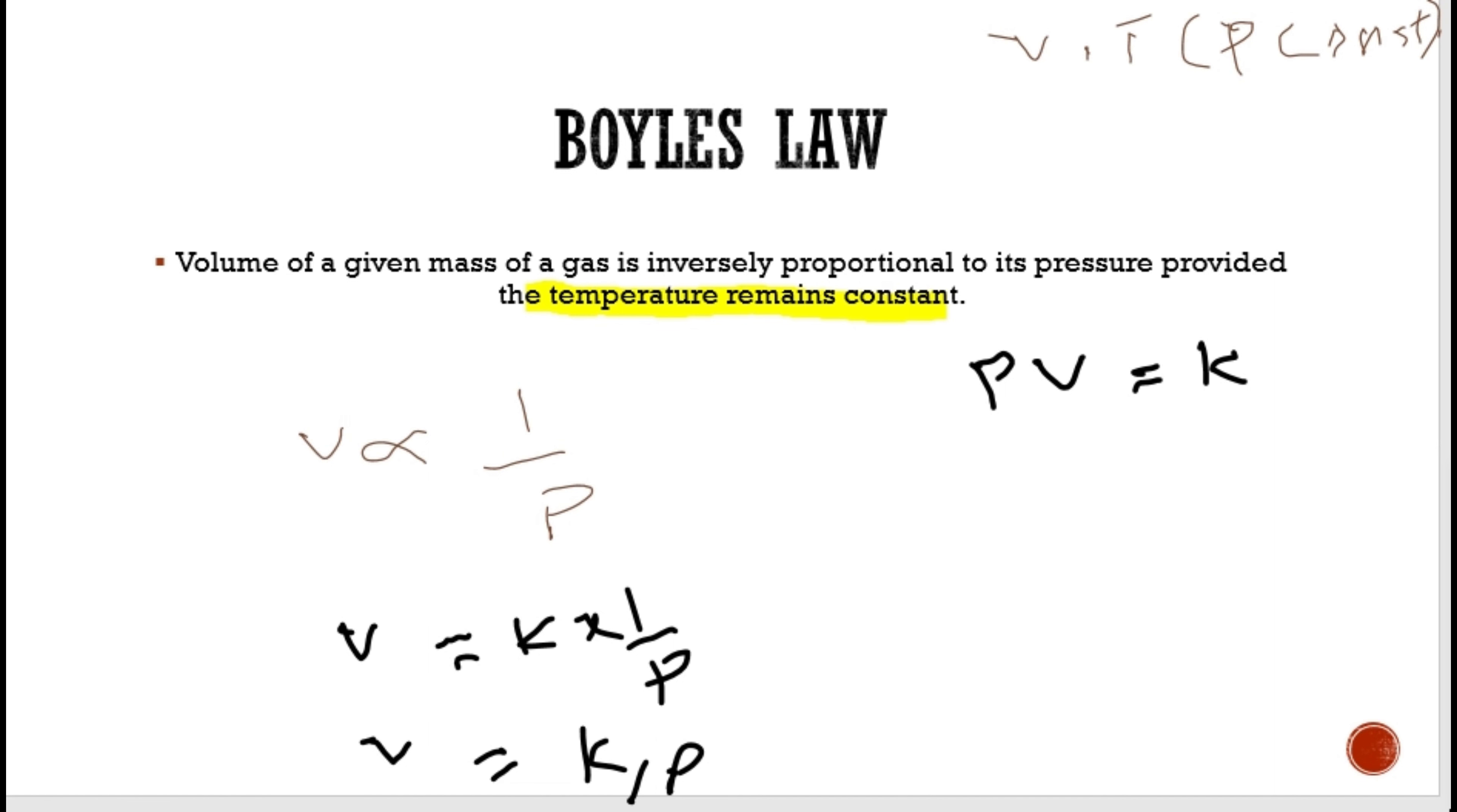Let's suppose we have an experiment performed. If we increase pressure from initial pressure P1 to final pressure P2, then volume will decrease from V1 to V2.